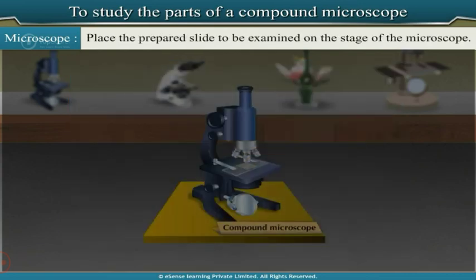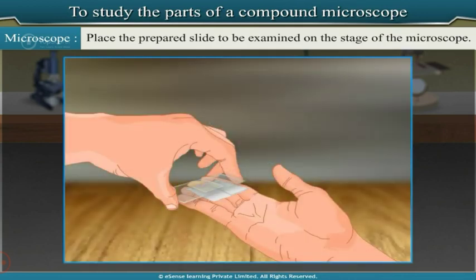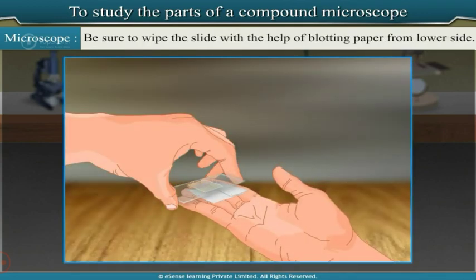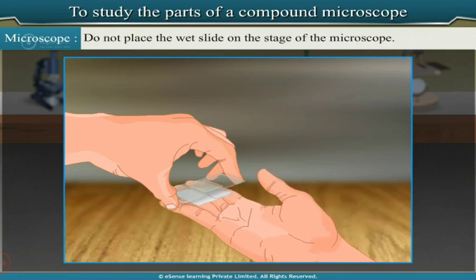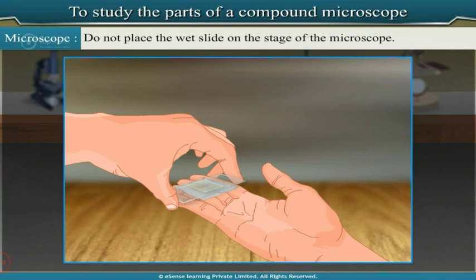Place the prepared slide on the stage of the microscope. Be sure to wipe the slide with blotting paper from the lower side. Do not place a wet slide on the stage.